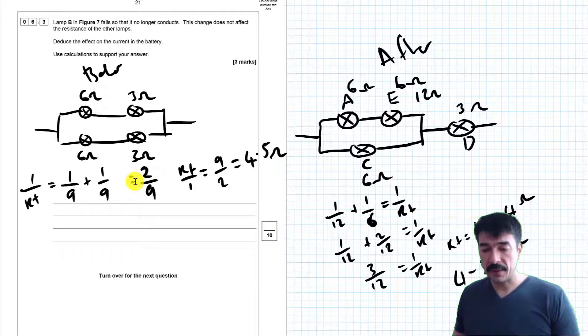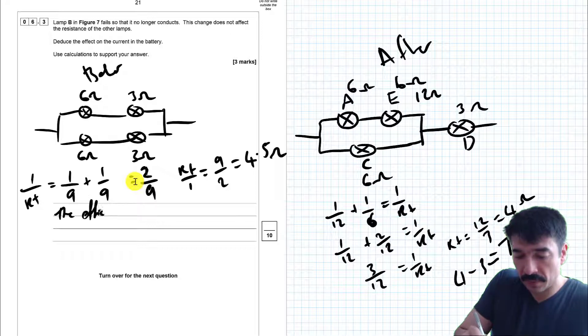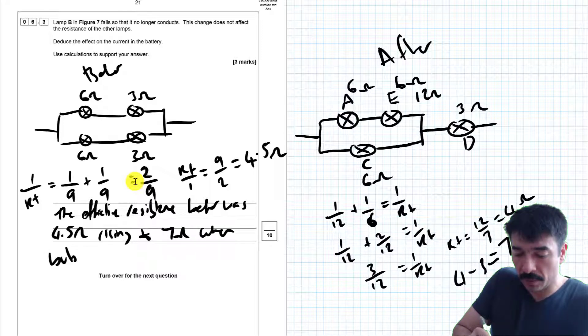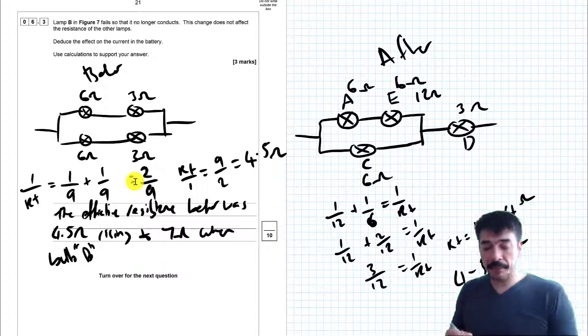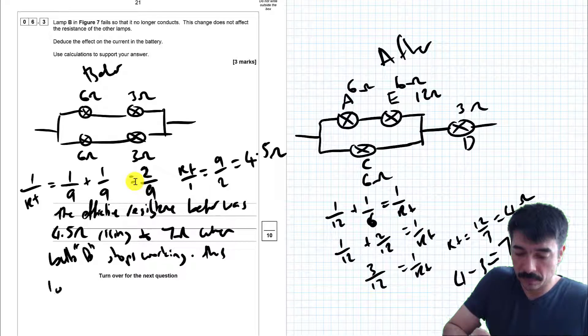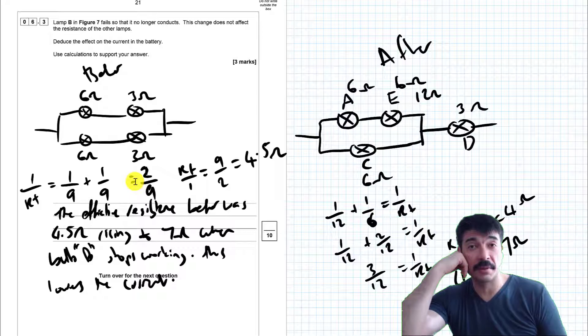So I can say that the effective resistance before was 4.5 ohms rising to 7 ohms when bulb B stops working. This lowers the current. Hopefully that will get me all the marks. I hope you've found this useful. Thanks for watching. Please like, subscribe and share. And if someone would like to buy me a faster computer that would be really nice.